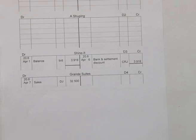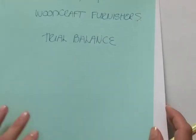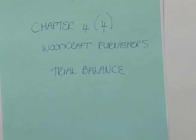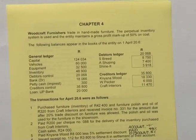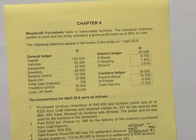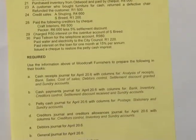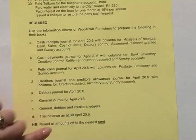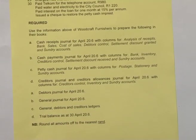You've now done all the postings from the journals to the general, debtors, and creditors ledgers. The next clip will deal with a brief discussion on how to draw up a trial balance. Welcome to the last session on Chapter 4 for Woodcraft Furnitures. We're now going to look at the trial balance that we have to draw up as at 30 April 20.6.